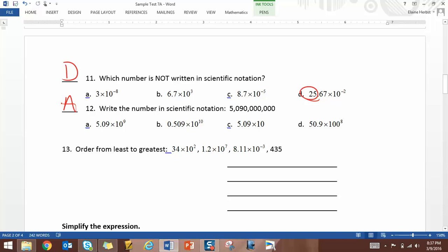Ordering from least to greatest. I'm going to put them all in proper scientific notation so that we are sure we're comparing them correctly. So basically the first number becomes 3.4 times 10 to the third. The last number is 4.35 times 10 to the second.